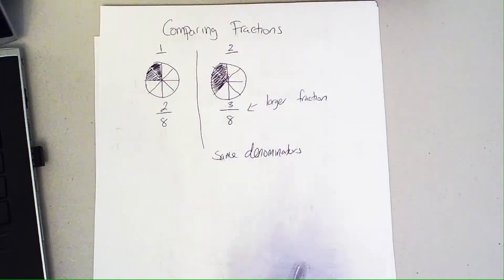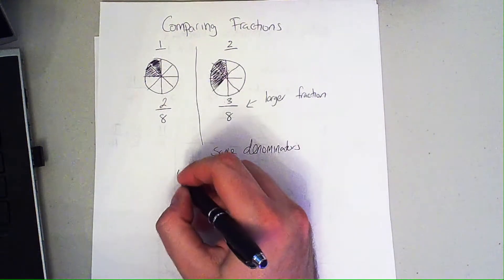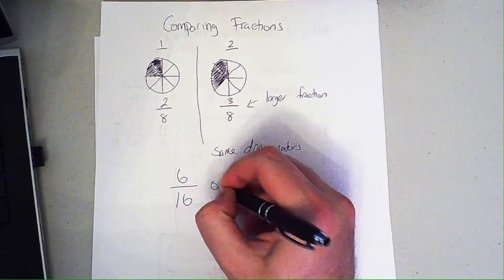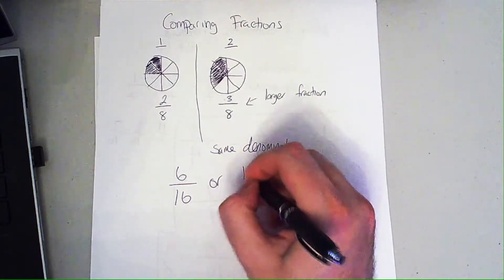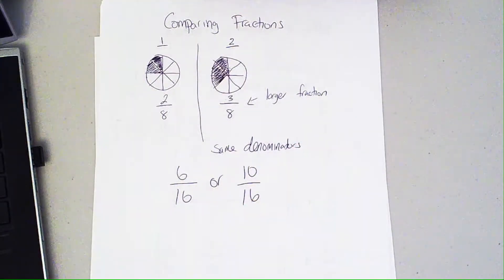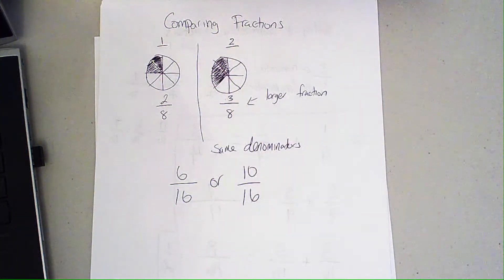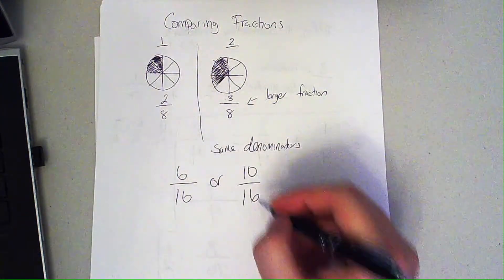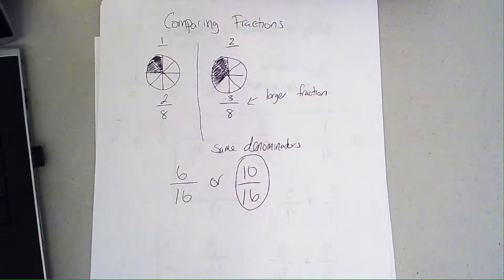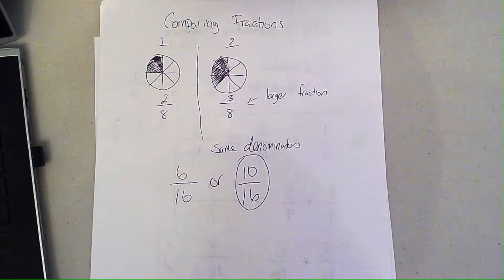If we were to look at two numbers like, say, 6/16 or 10/16, which is the larger fraction? In this case, denominators are the same, numerators are different. This is the larger fraction, that number is bigger.